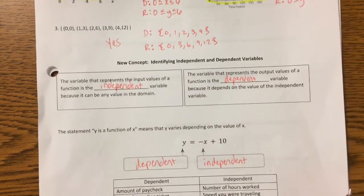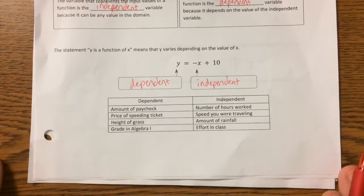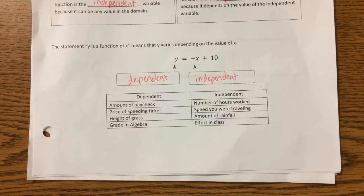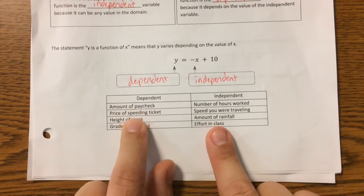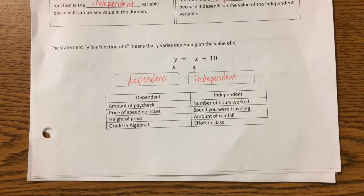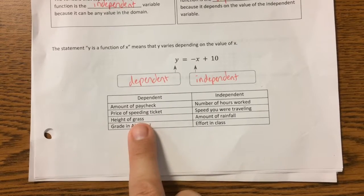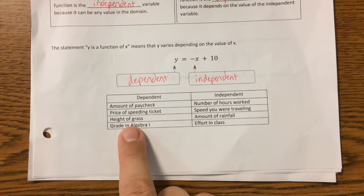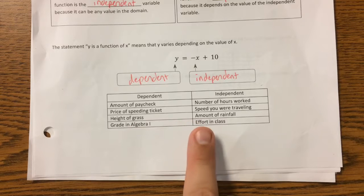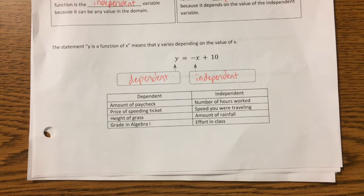When these variables actually stand for something, sometimes it can be tricky to figure out what depends on what, but they should all be pretty straightforward. The amount of your paycheck depends on how many hours you work — assuming you get paid hourly. The cost of a speeding ticket depends on how fast you were going. The height of the grass in your yard depends on how often you water or how much rain you get. And your grade depends on your effort.